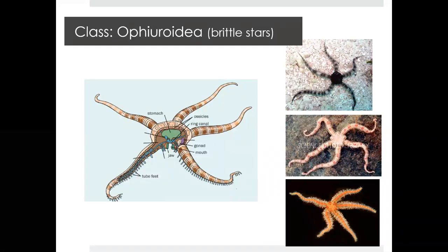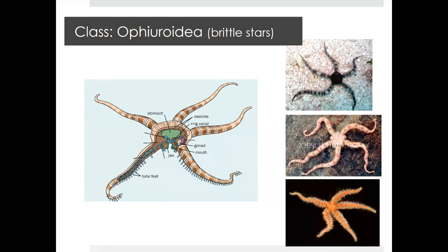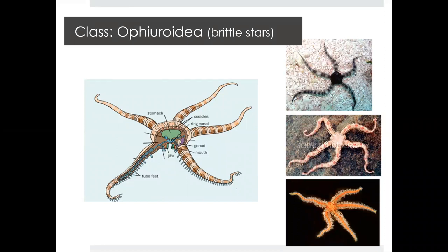Ophiuroidea are your brittle stars. This class is often confused with sea stars, which fall within Astroidea, whereas brittle stars are Ophiuroidea. One major difference between starfish and brittle stars is that brittle stars have a much more defined central disc, and their arms tend to be much longer and skinnier — not as broadly defined compared to a starfish. You can see they have these long arms and a very small, defined central disc.